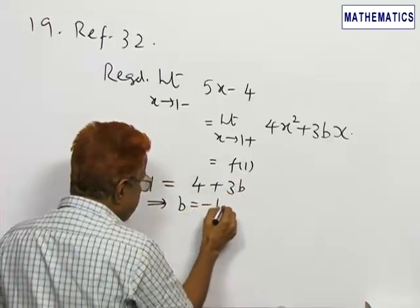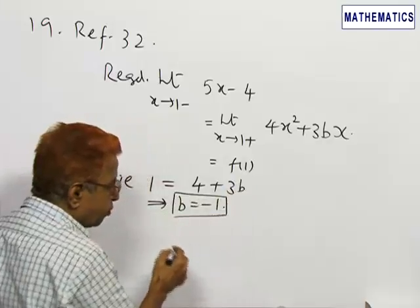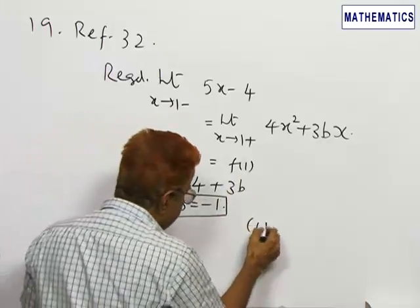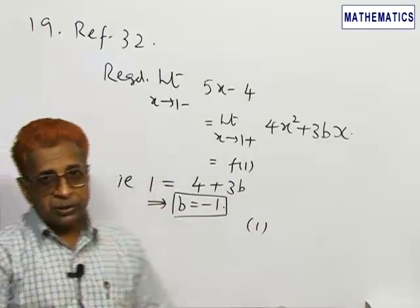That means b is equal to minus 1. Therefore, option 1 is the right option.